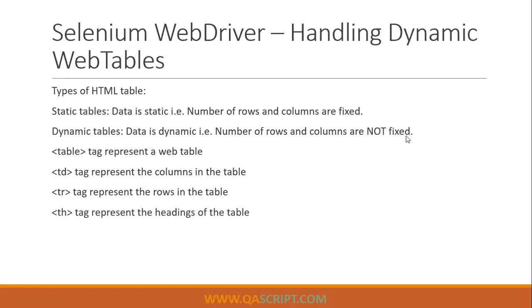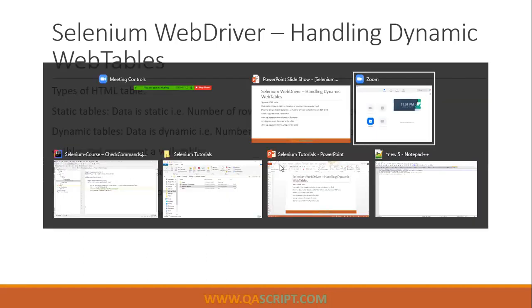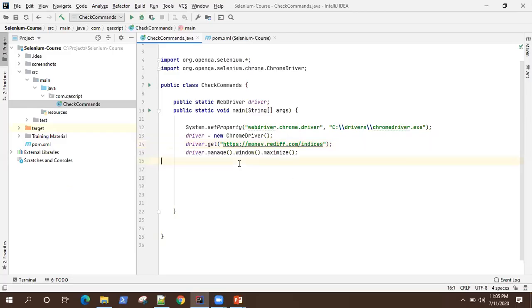I'm going to show you a live demo of how you can work with web tables in Selenium WebDriver. There are a few techniques through which you can actually identify a particular cell in a row or column. You cannot always give the XPath or any static path of a particular cell because that might be changing. Generally there are no unique properties of a particular cell, so it's very difficult to actually identify the cells.